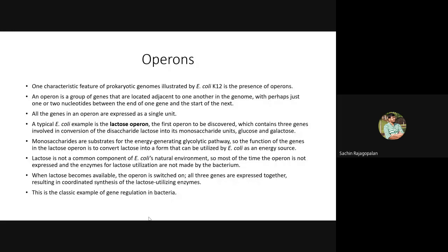Coming to operons — we have already discussed that an operon is nothing but a set of genes involved in one single type of metabolic pathway. All genes present in that cluster are going to express components required for metabolism of the same compound. Operons are a group of genes located adjacent to one another in the genome, with only one or two nucleotides between the genes.